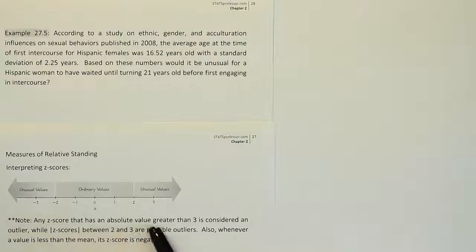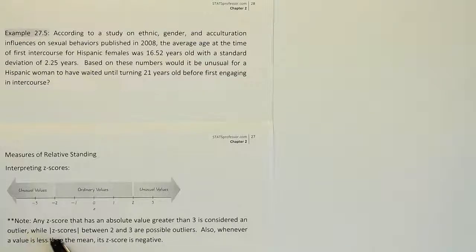Note, any z-score that has an absolute value greater than 3 is considered an outlier. An outlier would mean that it's unusual. And then it says, while z-scores between 2 and 3 are possible outliers. Notice that's absolute value, so negative 2 and negative 3 would also be considered possible outliers.